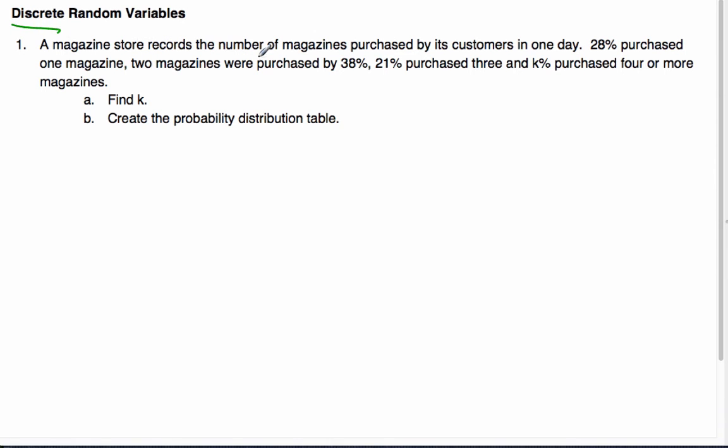So, here's an example using some discrete random variables. The magazine store records a number of magazines purchased by its customers in one day. 28% do one magazine, two magazines are purchased by 38%, 21% by 3, and K by four or more magazines. Find K. Well, what do I know about probabilities? I know that these are all my possibilities that I could do. I know that's people who have purchased them, and so, it's 28%, that's for one, plus 0.38 for two, plus 0.21 for three, plus K. All these probabilities have to add up to one, because these are the only possibilities. And so, when I do the mathematics on the arithmetic, I get K to be 0.13. That's for four or more magazines.